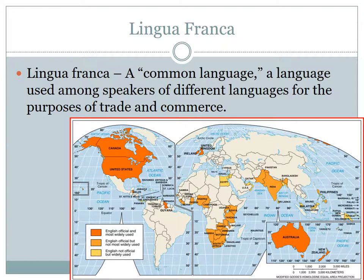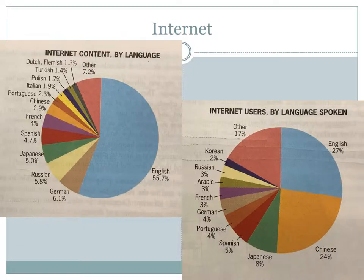A lingua franca can be a single language or a mixture of two languages. English is also the lingua franca of the internet — over 50% of internet content is published in English. But the language of internet users is quite different. While English still leads with 27% of internet users, the gap is closing with Mandarin at 24%, making huge strides. Japanese is at 8% and Spanish at 5%. We're starting to see changes, and it won't be long before internet content reflects some of these shifts.